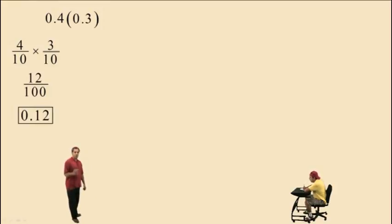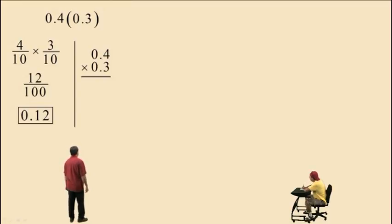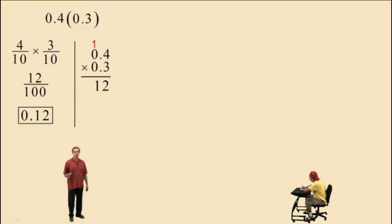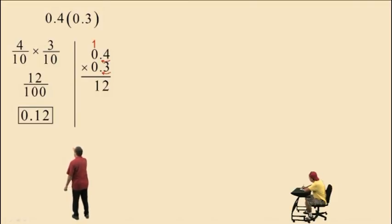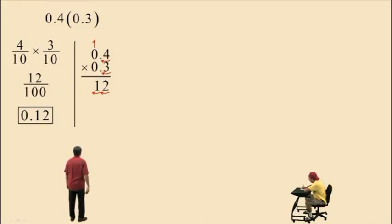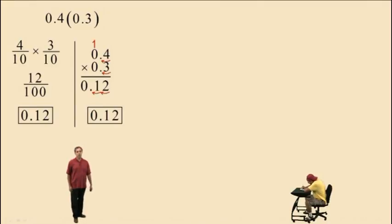Now let's perform the multiplication problem using the vertical format. In this case, we don't have to worry about lining up by place value — we just put the numbers in. Four times three is twelve: write down the two, carry the one. Three times zero is zero, add the one, you get one. Then you're supposed to count the place values in the numbers you're multiplying together. We have one place value on the four tenths and one place value on the three tenths — you're multiplying a tenth by a tenth, which means your result will be hundredths. You can see that in the fraction calculation: four tenths times three tenths gives twelve hundredths, which means two decimal place values in your answer. So you move two decimal place values, giving you the result of twelve hundredths — zero point one two.